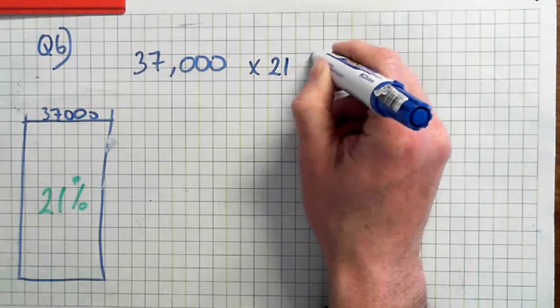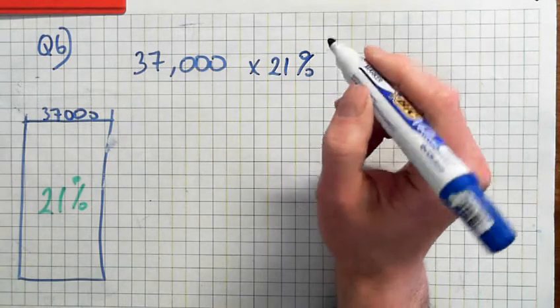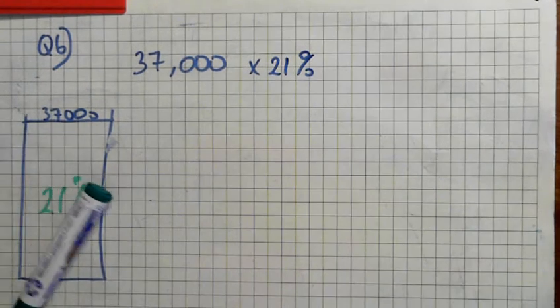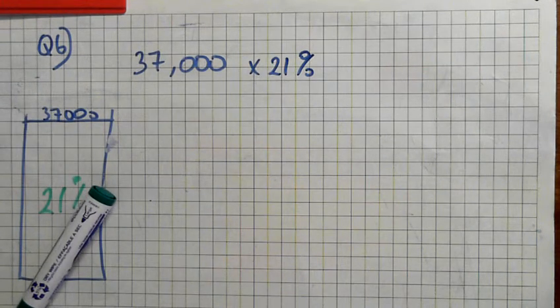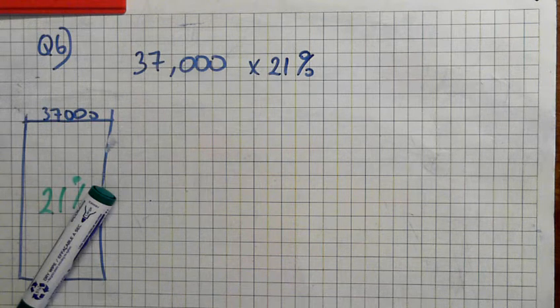We get 21% of that on the calculator. So 37,000 times 21%.